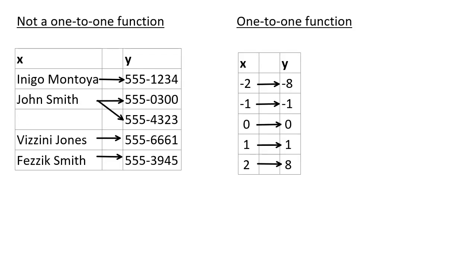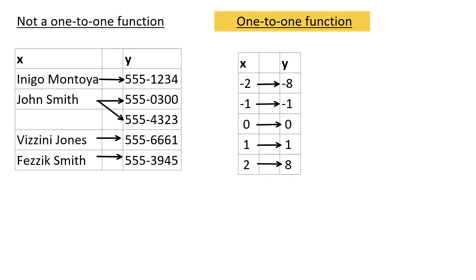When we think about pairings, that's one way to define a function, and it is not a one-to-one function when we have two possible y values for a single x. The function on the right, however, which turns out to be the cubic function f(x) = x³, is a one-to-one function. For each x there's only a single y, and for each y there's only a single x.